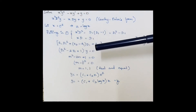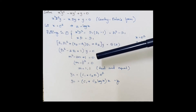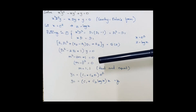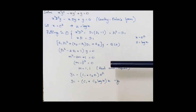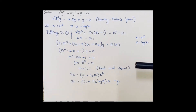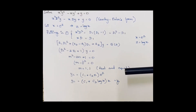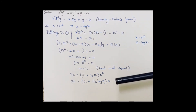The auxiliary equation becomes m² - 2m + 1 = 0, which factors as (m - 1)² = 0. The roots are m = 1 and m = 1, which are real and equal. For such roots, the complementary function is of the form (c1 + c2·z)·e^z.